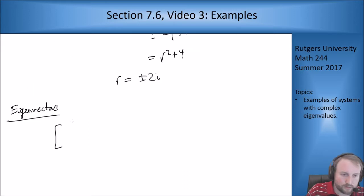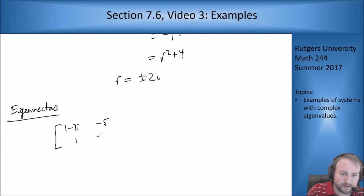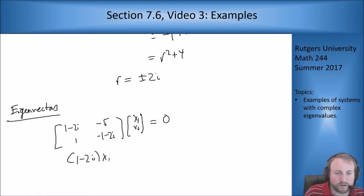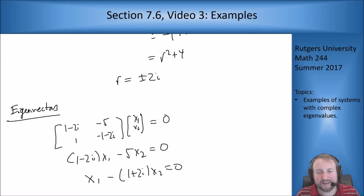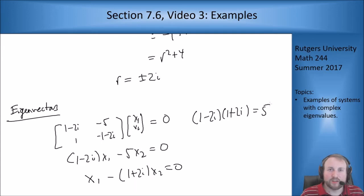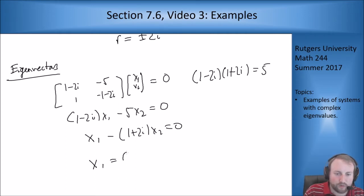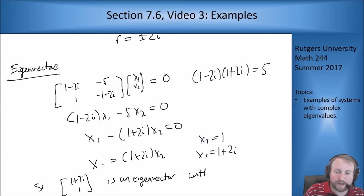So now let's plug that in and see what we get for eigenvectors. 1 minus 2i, minus 5, 1, minus 1 minus 2i, x1, x2 equals 0, which turns into 1 minus 2i x1 minus 5 x2 equals 0, and then x1 minus 1 plus 2i x2 equals 0. Now this is one of those ones that doesn't really look like they're redundant, but if you work out what 1 minus 2i times 1 plus 2i is, it turns out this is 5. So if I multiply the bottom equation by 1 minus 2i, I'm going to get a copy of the first one. So that means these are in fact redundant, and I can just look at the second equation, which tells me that x1 equals 1 plus 2i x2. So x2 equals 1, x1 equals 1 plus 2i, so 1 plus 2i, 1 is an eigenvector with eigenvalue 2i.